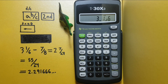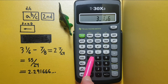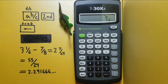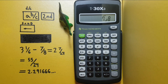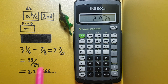If we wanted to subtract 7 eighths, we would then go minus, 7, ABC, 8, equals, and this gives us the result of 2 and 7 twenty-fourths.